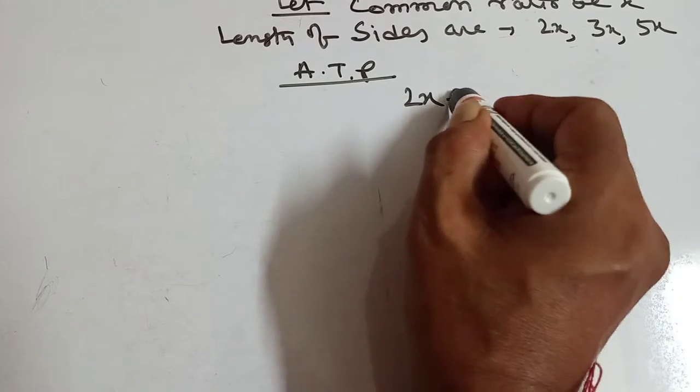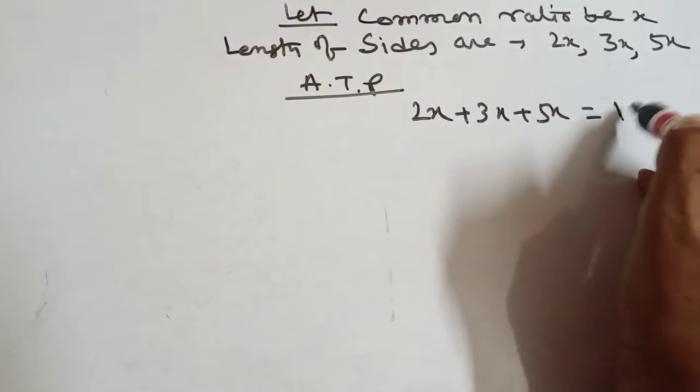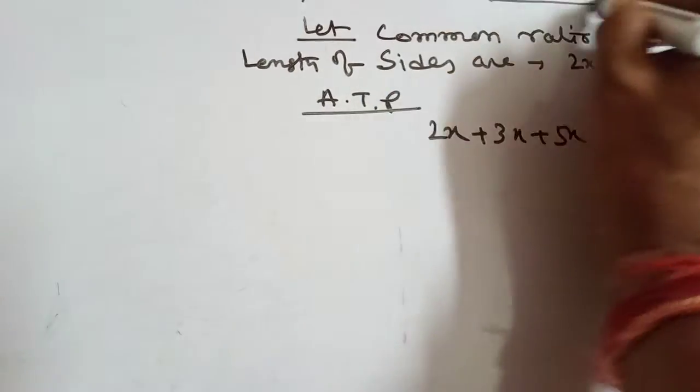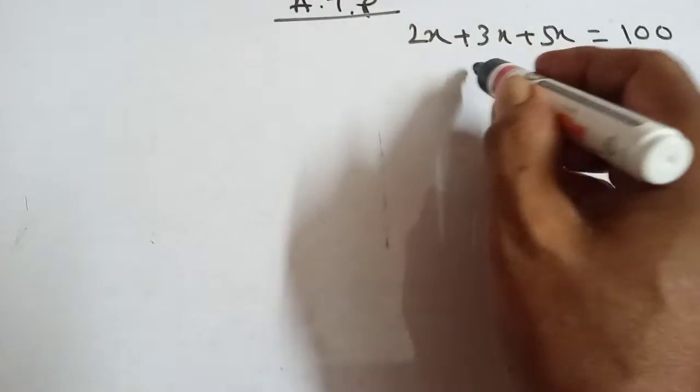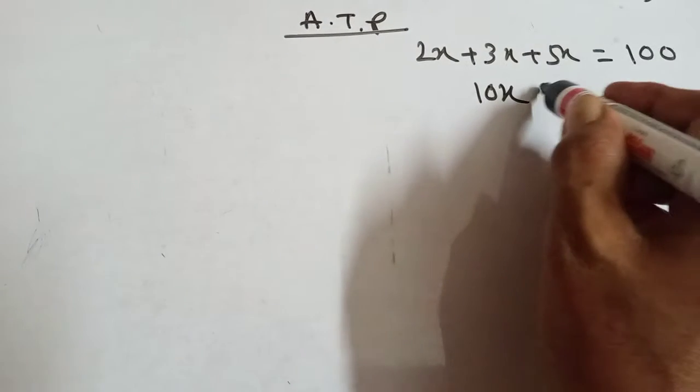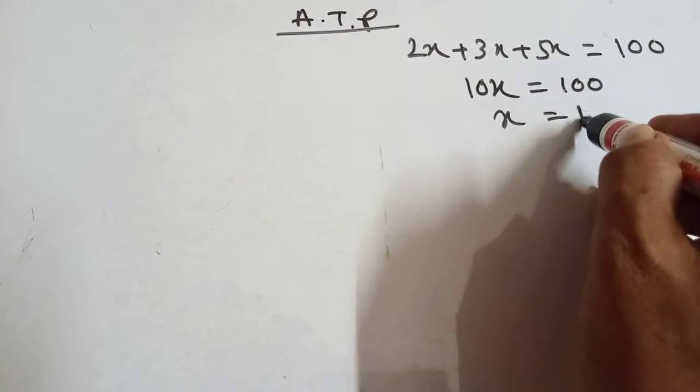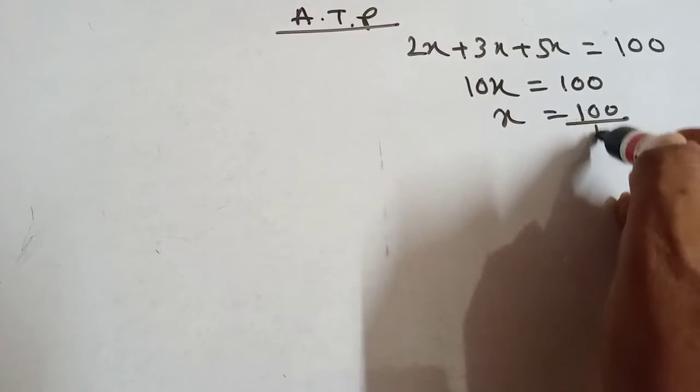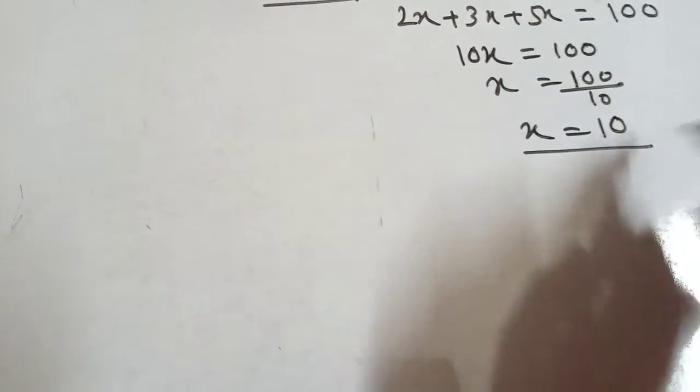2x plus 3x plus 5x equal to 100. Perimeter is given as 100. So 10x equal to 100, x equal to 100 by 10. That means x equal to 10.